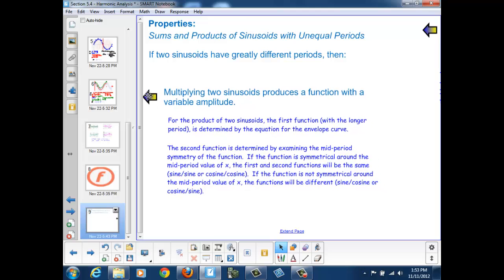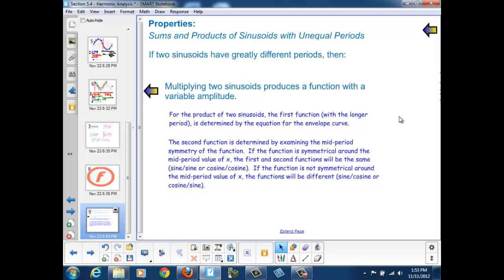For the product of sinusoids, we produce a function with a variable amplitude. And that first function in the product, the one with the longer period, is determined by the equation for the envelope curve instead of the sinusoidal axis. The second function is determined by examining the midperiod symmetry of the function. If the function is symmetrical around the midperiod value of x, the first and second functions will be the same, either sine and sine, or cosine and cosine.